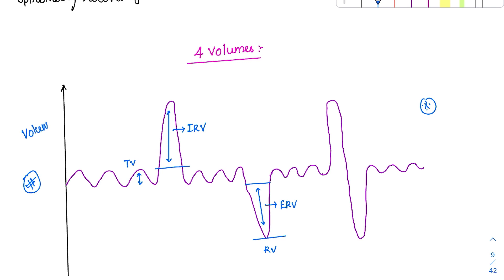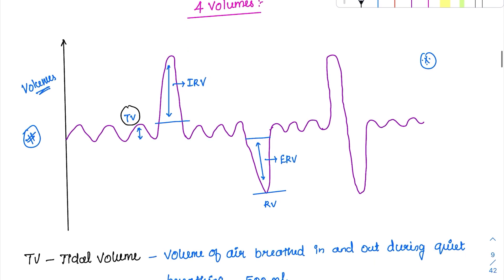In the lungs we have four volumes and four capacities. Coming to the volumes first — the normal inspiration and expiration is called as the tidal volume. The volume of air which is breathed in and out of the lung during normal breathing is called as tidal volume, and its value is 500 ml.